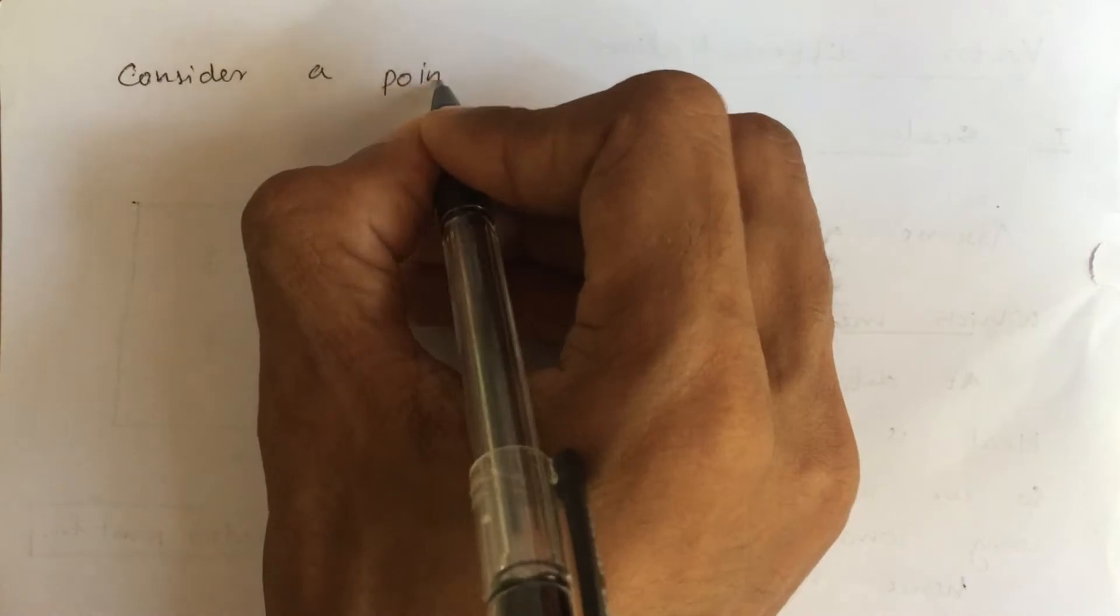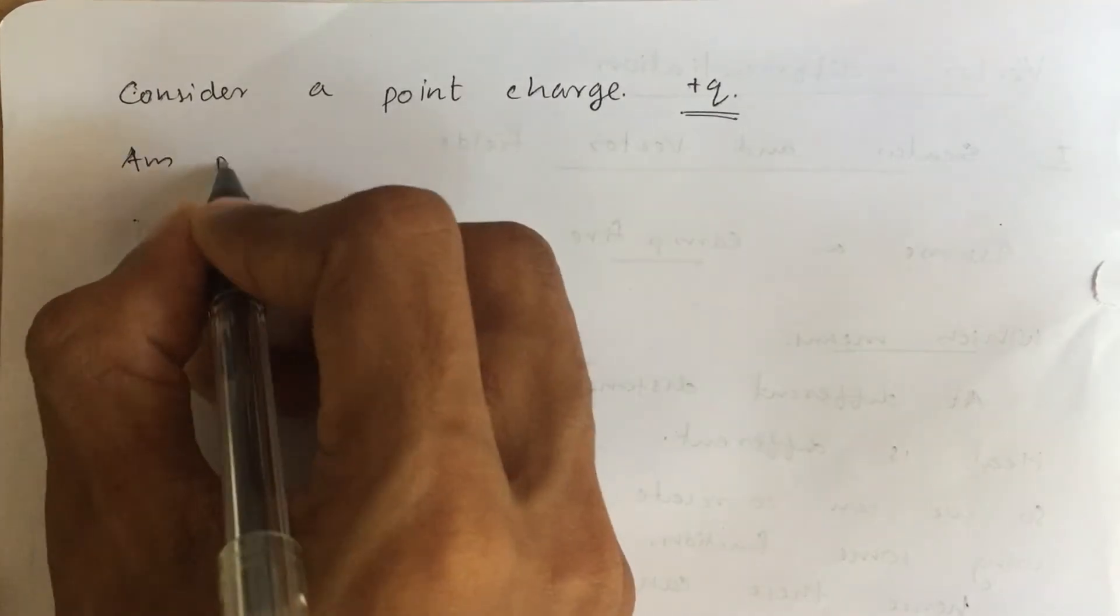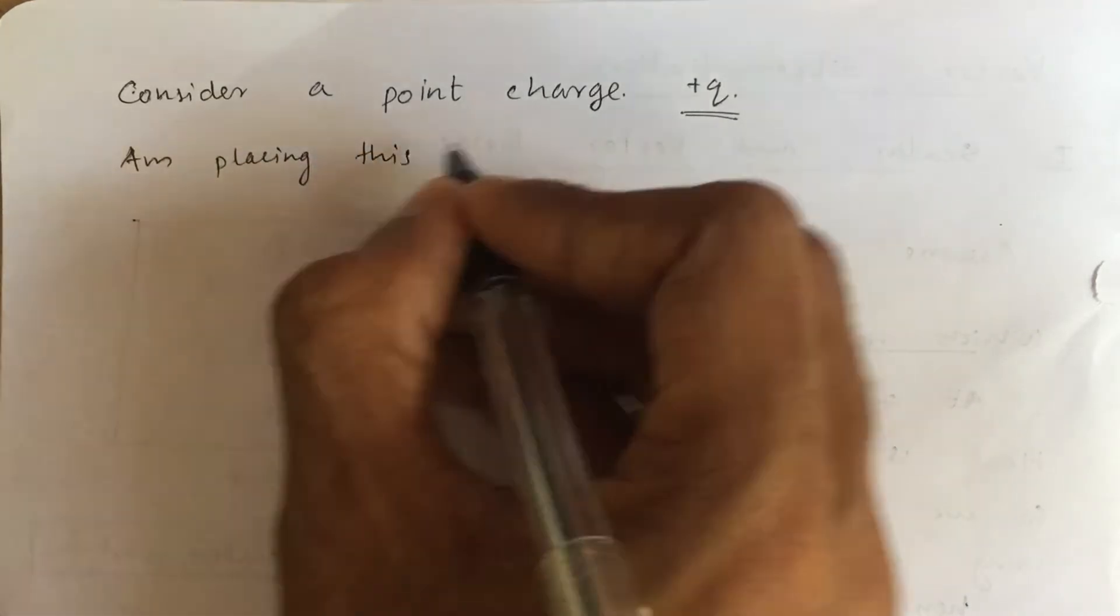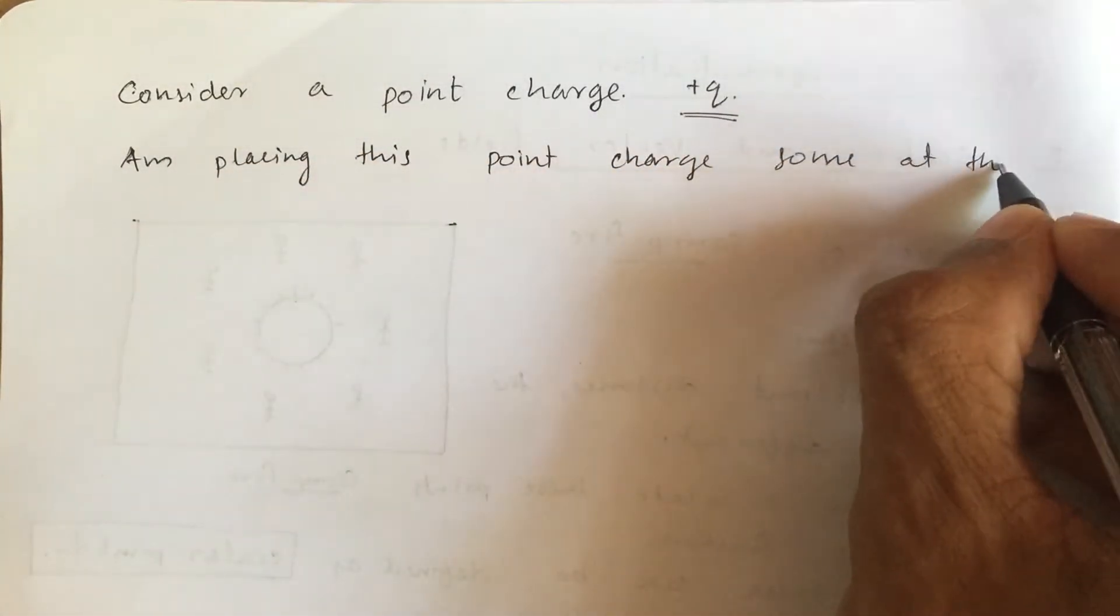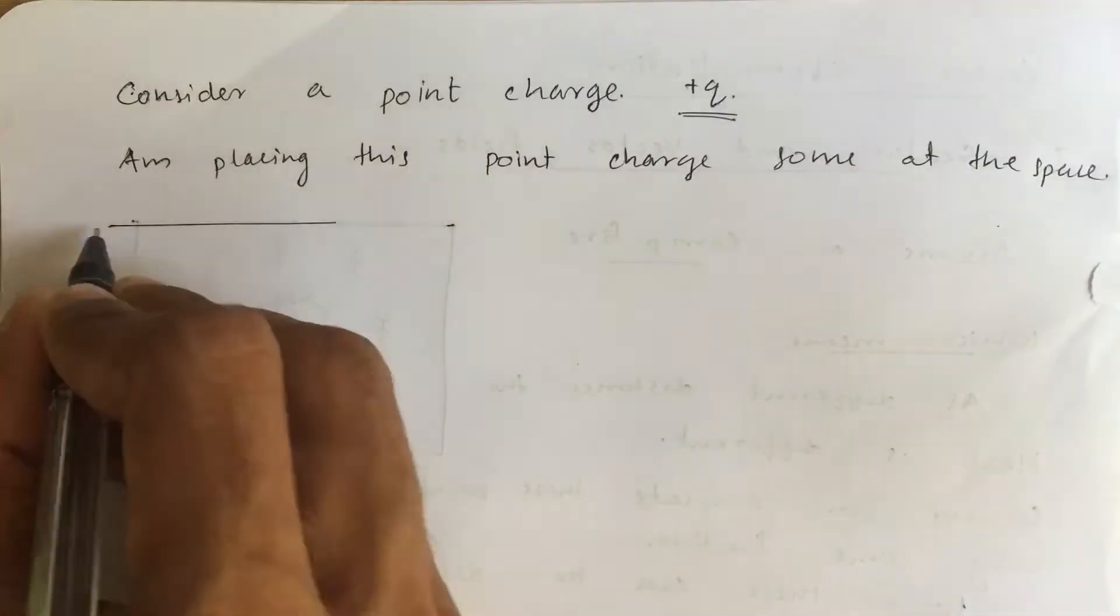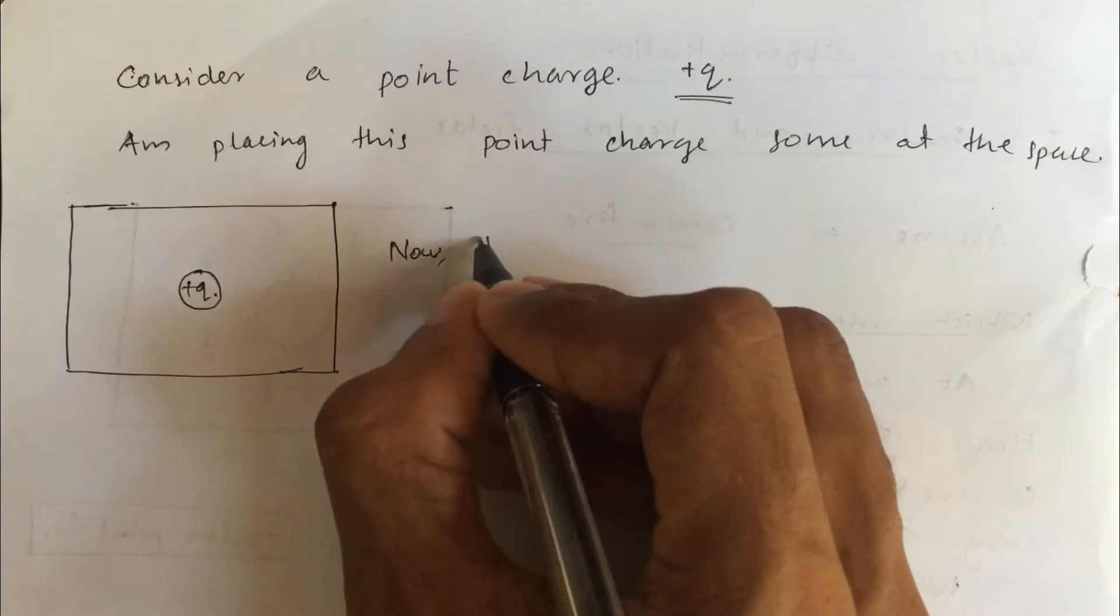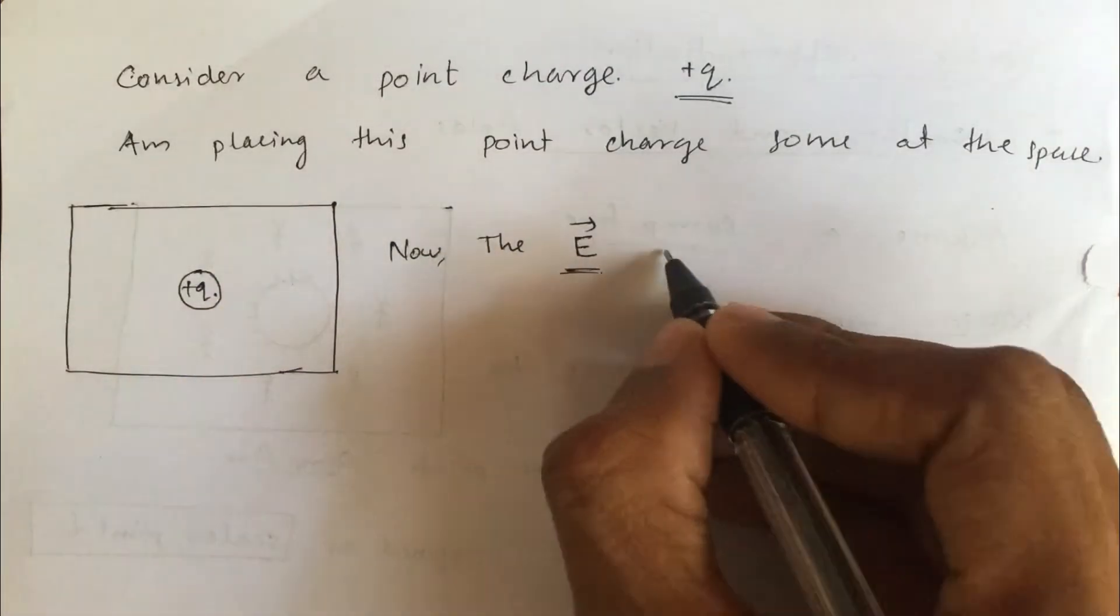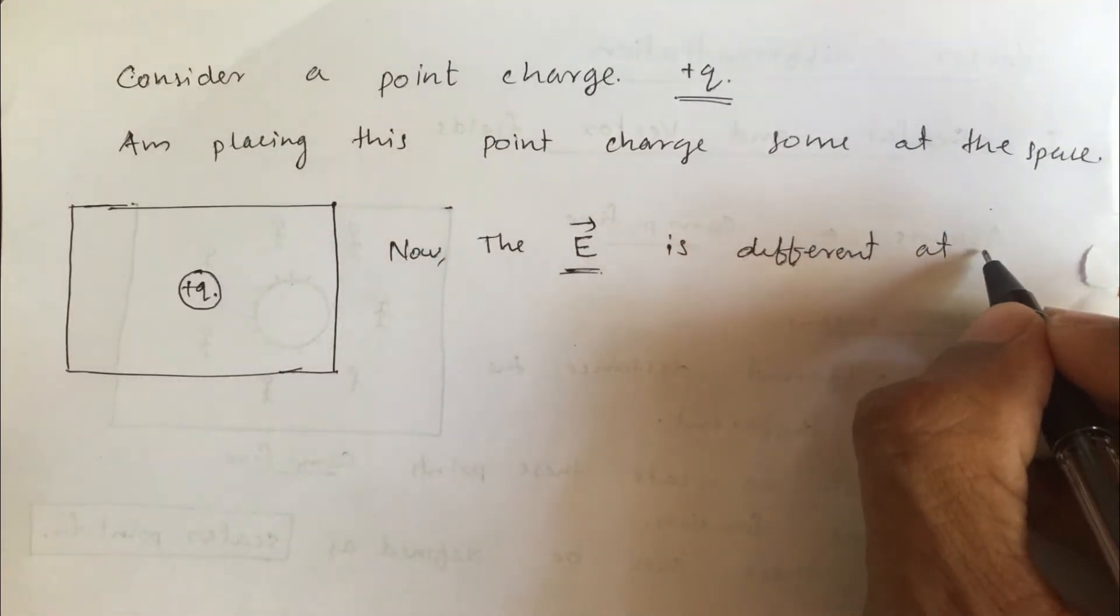Consider a point charge plus Q. Let's place this somewhere in the space. Now, the electric field, which has a vector character, is different at different points in the same potential surface.